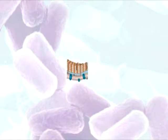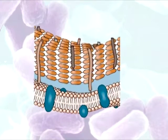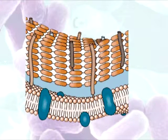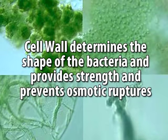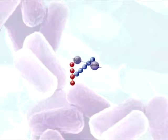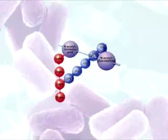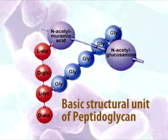The cell wall is a very important component of the bacterial cell and is present in all bacteria except mycoplasmas, which are called wall-less bacteria. Its two principal functions are: first, it determines the shape of the bacteria due to its rigidity; second, it provides strength and prevents osmotic rupture. Cell walls are generally made up of a complex polysaccharide called peptidoglycan — a complex of amino acids and sugars unique to bacteria — which comprises about 20 to 40 percent of bacteria in general.